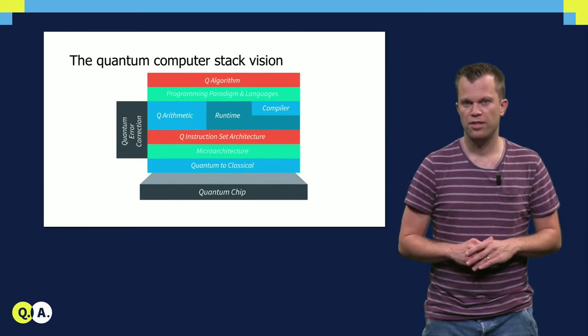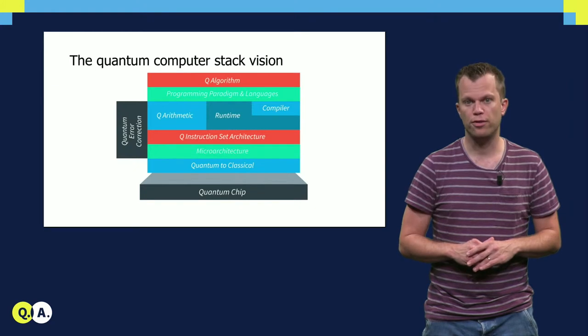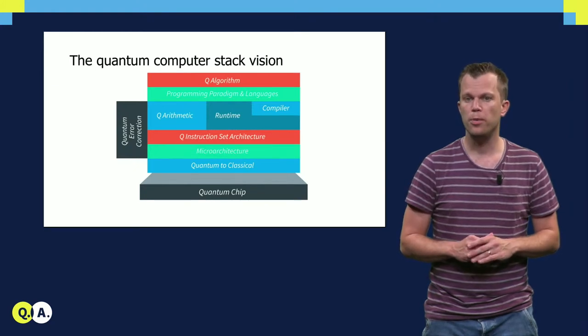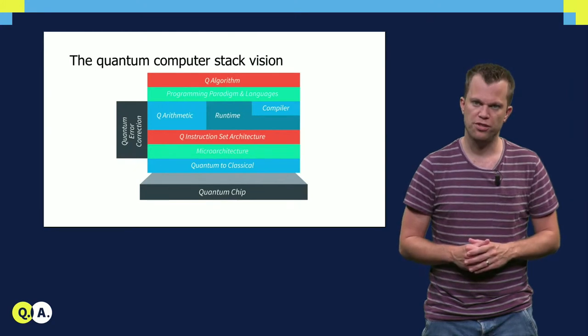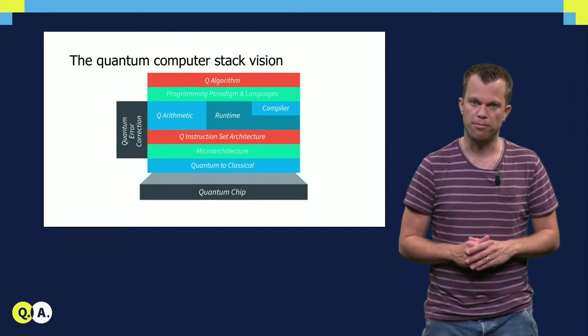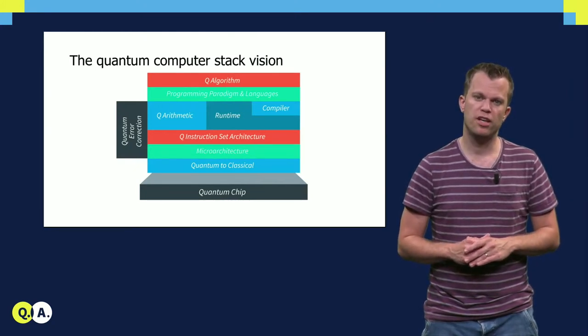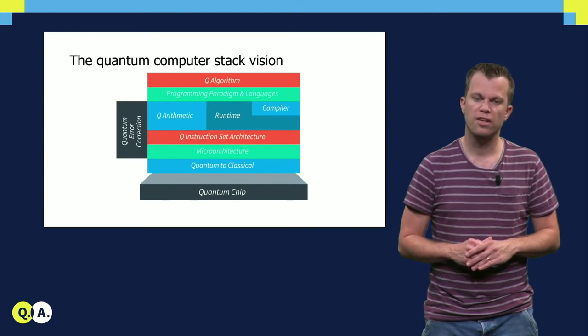Theoretical predictions state that for practical fault-tolerant quantum computing it will be necessary to perform thousands of operations within the qubit coherence time. While more sophisticated quantum error correction protocols are actively being studied,